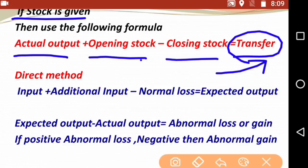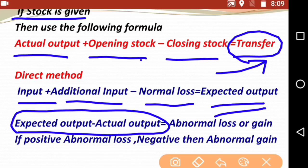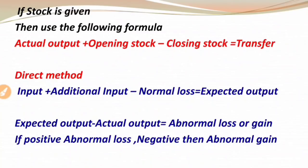In paragraph format, the statement of units flow is: first take input, add additional input, then deduct normal loss, get expected output, compare expected output to actual output, and from that determine abnormal loss or abnormal gain. This is the overall theory, and on this basis you solve the practical question.